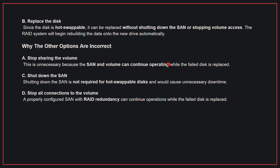Why the other options are incorrect? A. Stop sharing the volume — this is unnecessary because the SAN and volume can continue operating while the failed disk is replaced. C. Shut down the SAN — shutting down the SAN is not required for hot-swappable disks and would cause unnecessary downtime. D. Stop all connections to the volume — a properly configured SAN with RAID redundancy can continue operations while the failed disk is replaced. Therefore, the correct answer is B, replace the disk.